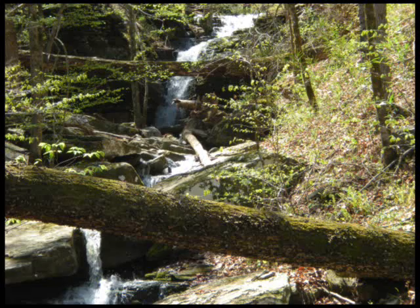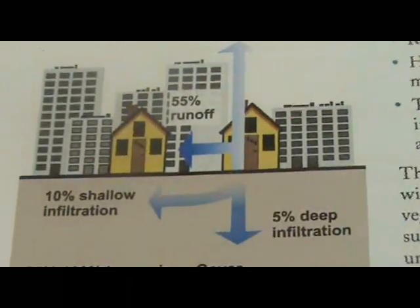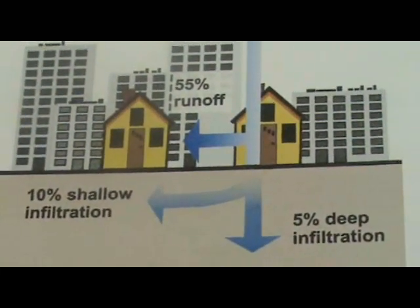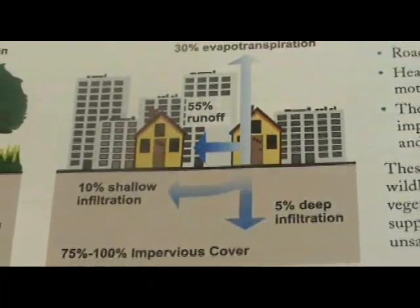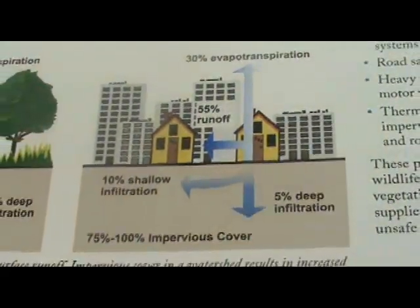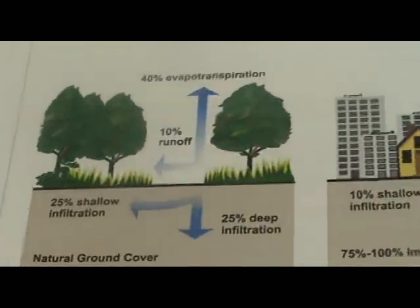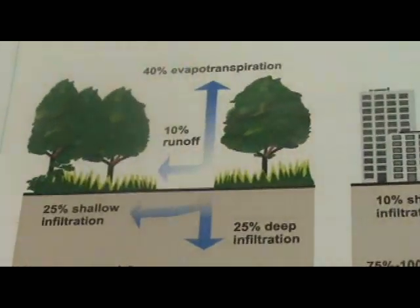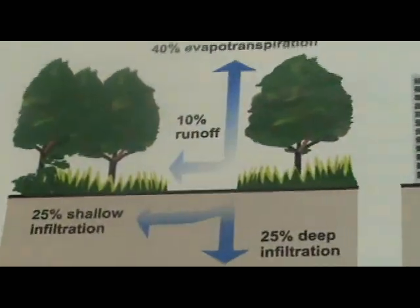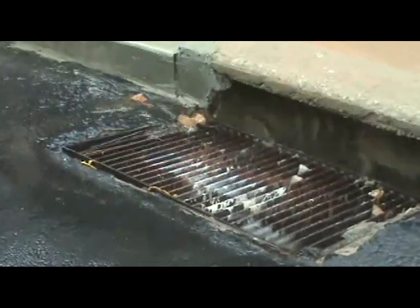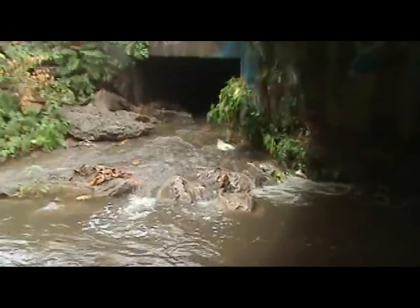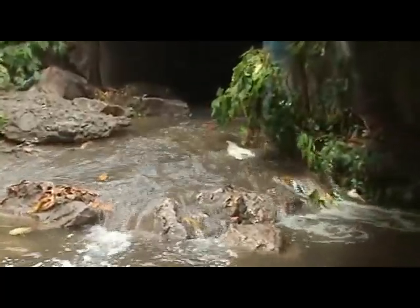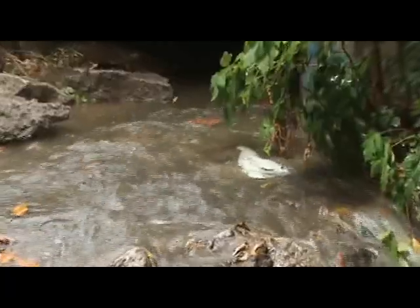For example, urbanized areas can shed 55% of the rainfall as stormwater runoff, while undeveloped or rural areas may only shed about 10% of rainfall as runoff. In cities, stormwater runoff flows down storm drains and is collected and concentrated in underground storm sewer systems that increase the speed and force of water and deliver that water directly to streams.